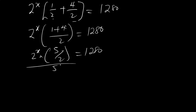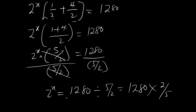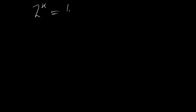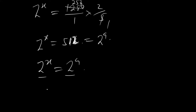Now divide both sides by 5 over 2. This will cancel out, giving you 2 to the power x equal to 1280 divided by 5 over 2. This is the same as 1280 times 2 over 5. That gives 2560 divided by 5, which is 512. So 2 to the power x equals 512, which is the same as 2 to the power 9. Since the bases are the same, you equate the powers, so x is equal to 9. That is the final answer.